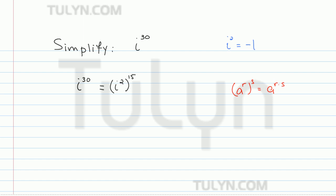In this case, 2 times 15 is going to be 30. So then, simplifying, i squared, as we said, is negative 1 to the 15th power.